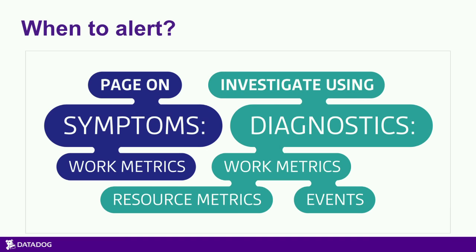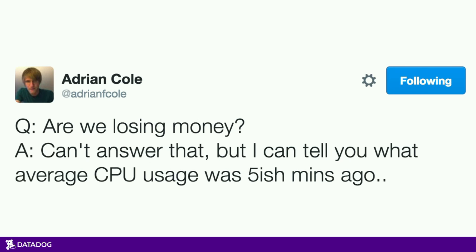So when do we alert? Focus on those work metrics — focus on the symptoms that are actually impacting customers. Use the resource metrics and events for diagnosis. Alert on things like throughput — is a given value much higher or lower than expected? Alert on an increase in error rates that might impact customer success. If work is taking much longer to complete — the website takes 60 seconds to load, and people get annoyed at milliseconds — alert on that. But don't alert on high CPU usage, because that won't tell you whether you're losing money.